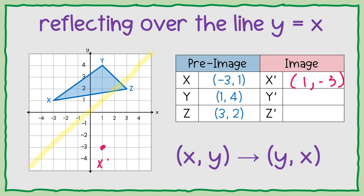So if I switch the numbers on y, instead of being 1, 4, it's going to turn into 4, 1. So y prime is going to be 4, 1, right here.